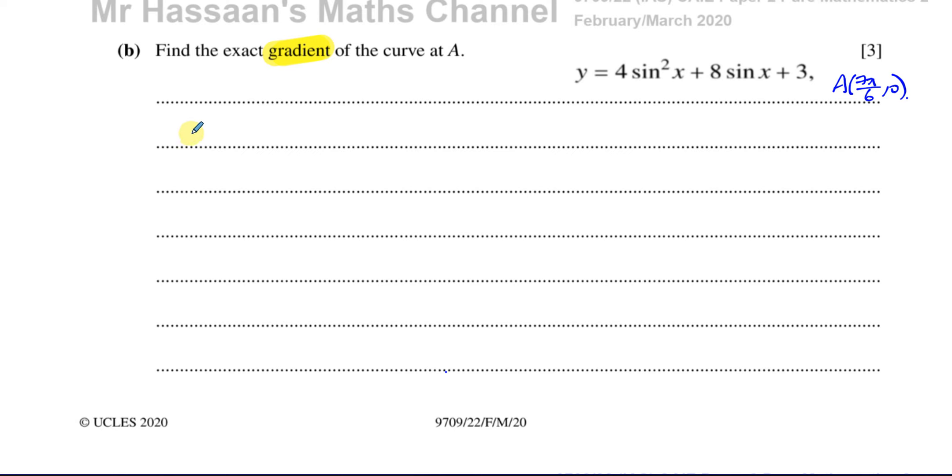So the gradient function is dy/dx, and if we differentiate this with respect to x, we have 4 times sine squared x. Now if you remember, sine squared x is the same as sine x all squared, plus 8 sine x plus 3. So when you differentiate sine squared of x, which is sine x all squared, we can think of this as the main function is something squared. Inside the function is sine x, so you have a function within a function. So we have to use the chain rule.